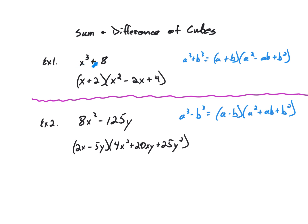In example 1 we have x cubed plus 8. The cube root of x cubed is x, so a equals x. The cube root of 8 is 2, because 2 times 2 times 2 is 8, so b equals 2. Applying the formula, a plus b is x plus 2, and the trinomial is a squared minus ab plus b squared: x squared minus 2x plus 4. So x cubed plus 8 factors as (x plus 2)(x squared minus 2x plus 4).